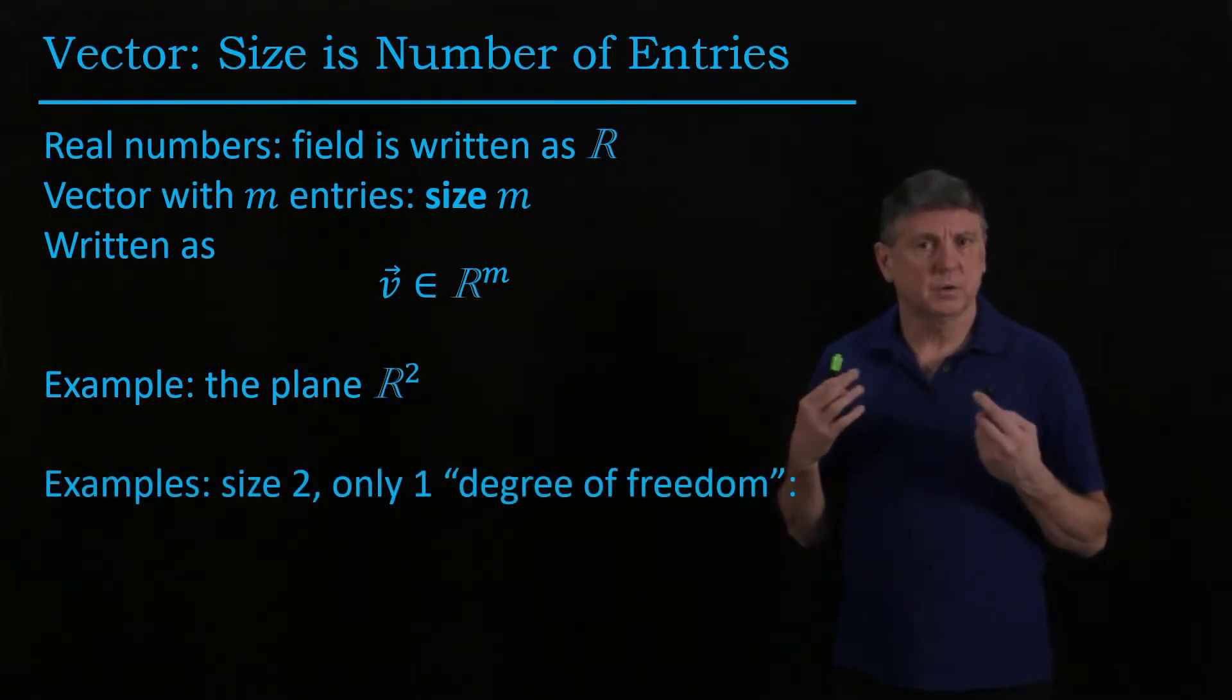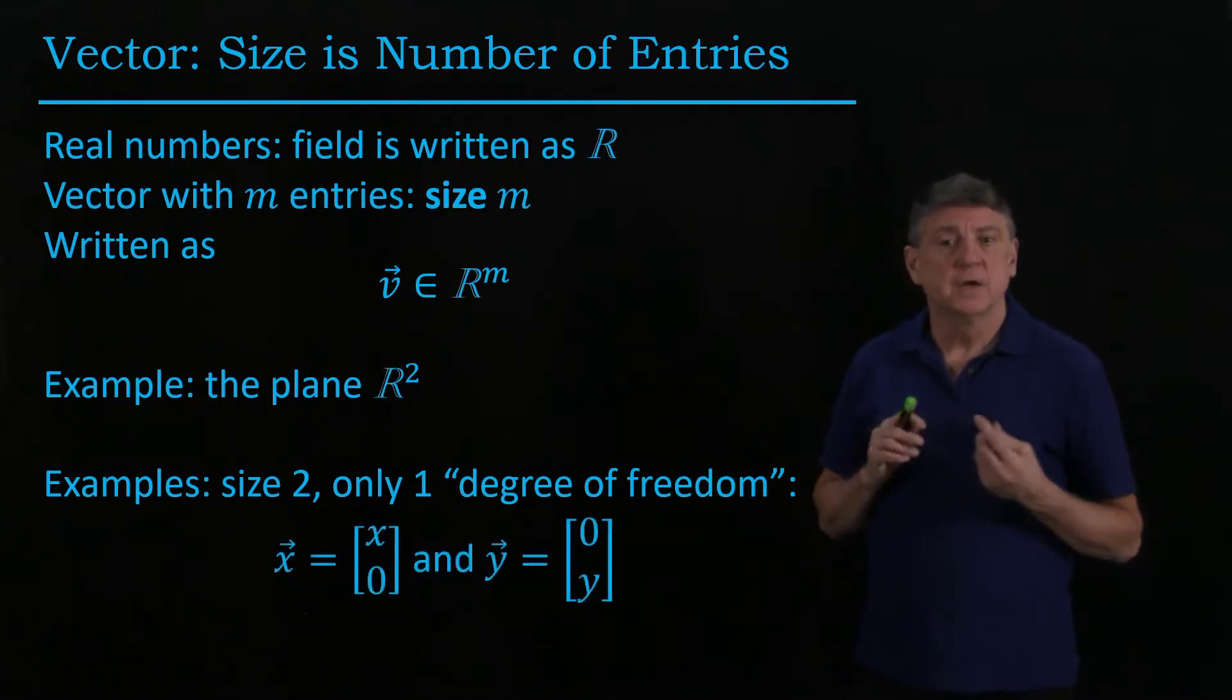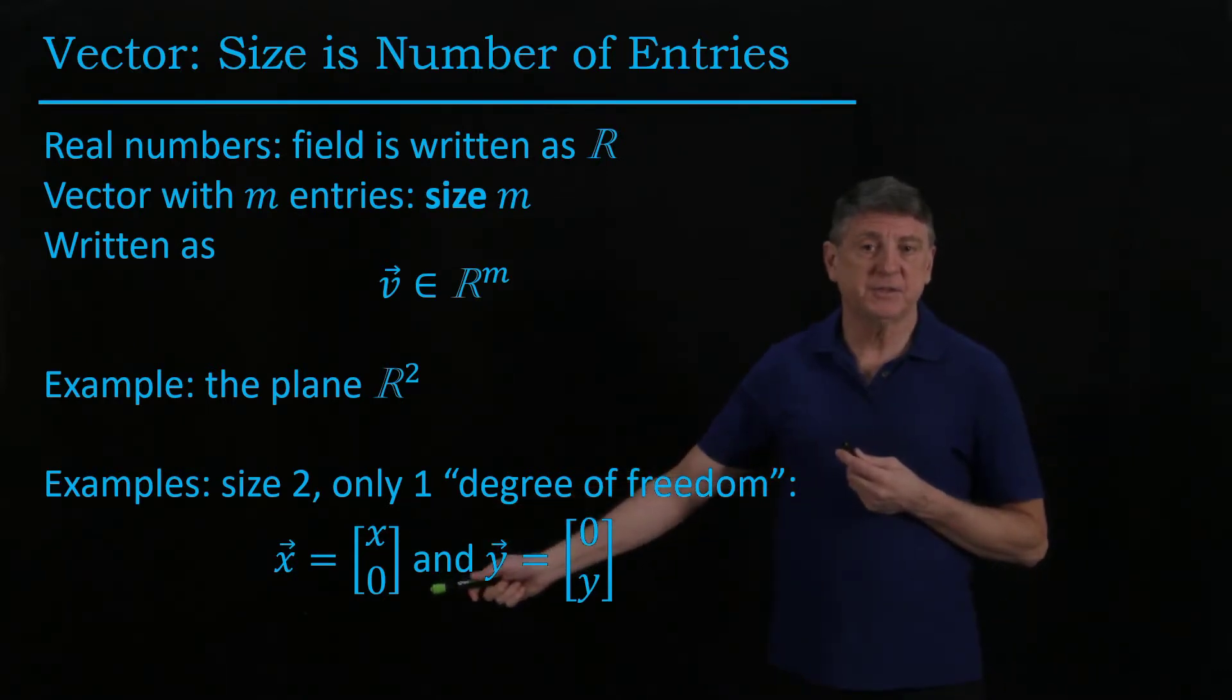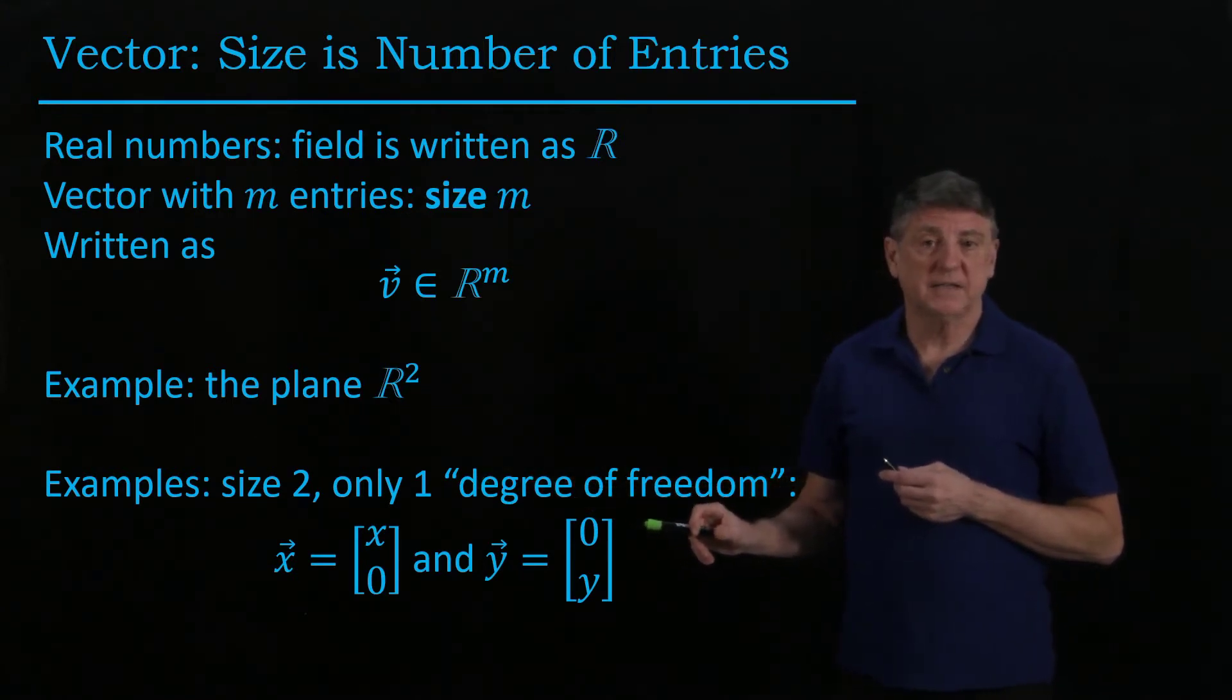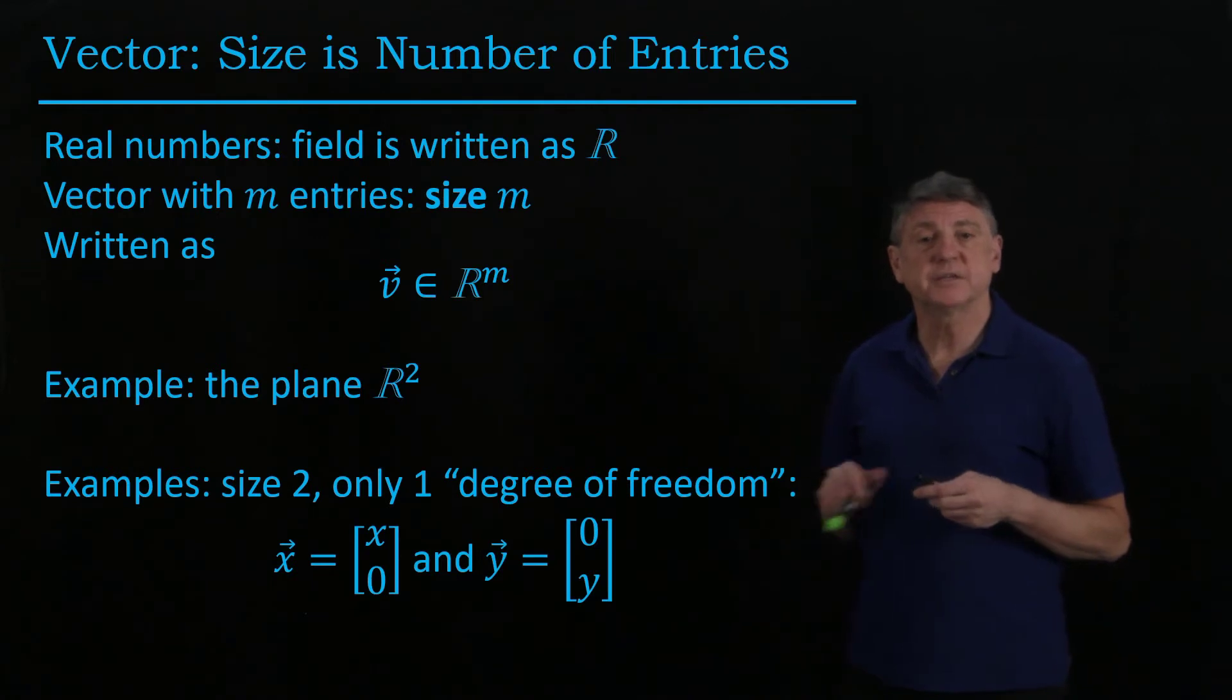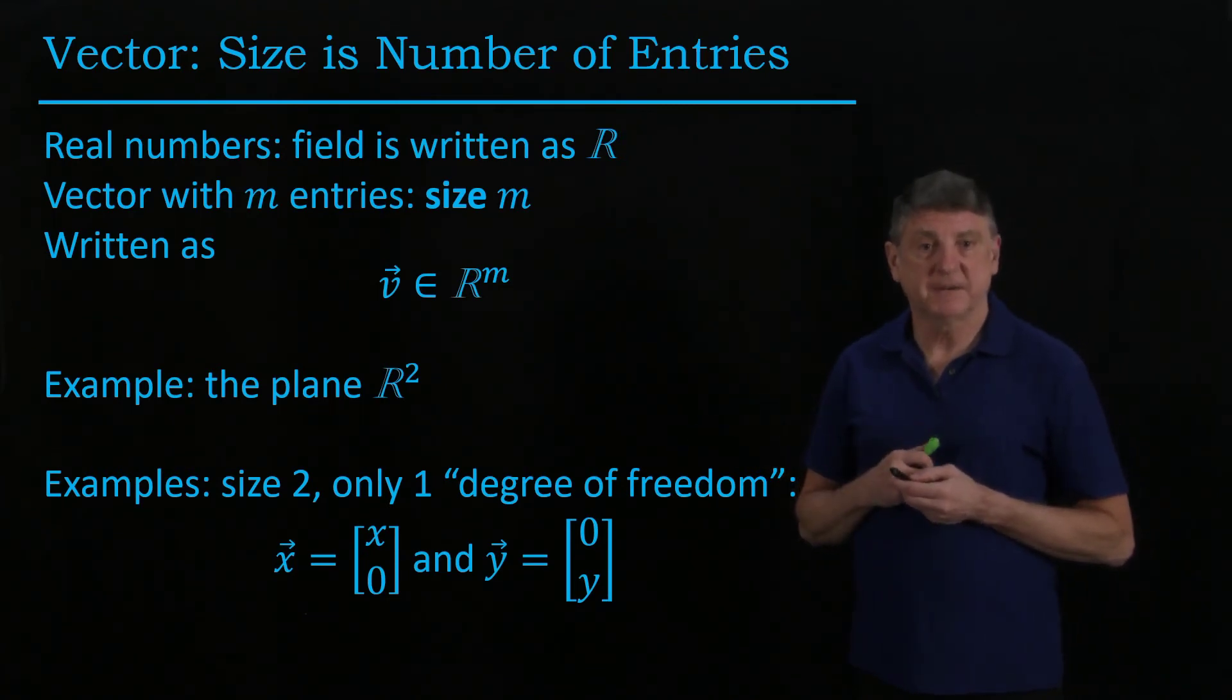Let's go through a quick example to see how something can have a size 2, but only one what mathematicians describe as a degree of freedom. Suppose that we describe a vector x as having any real number in its first entry and having a zero in its second entry. This is definitely of size 2. And we say it's one degree of freedom because it only takes a single real number to describe it. We could have a vector y that has a zero in its first entry and the second entry is any real number. And in both of these cases, we would say they have one degree of freedom. What I would say is that there's an important sense in which they live in a one-dimensional vector space.